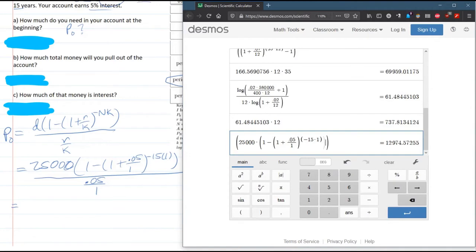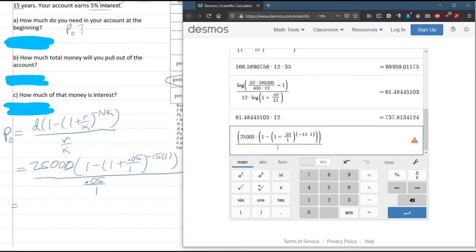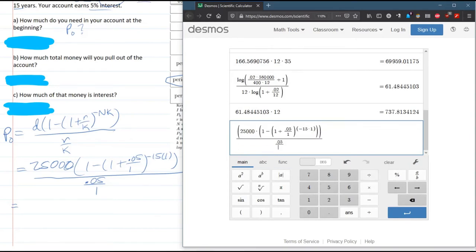So, I think I need to close parenthesis there. Now, we're going to divide it by 0.05 divided by 1. Okay, 259491.